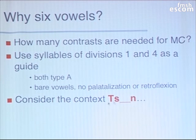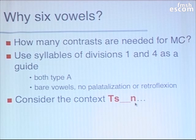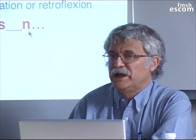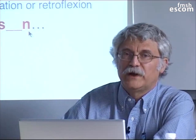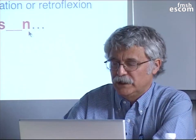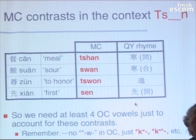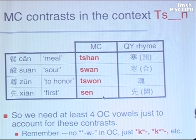So basically, where I started was to figure out how many vowels you would need to account for the contrasts of Middle Chinese in first and fourth division syllables. For purposes of illustration, I'm going to take the context of a sibilant initial with an N coda and see how many contrasts we have in Middle Chinese, and that will take us on the road to figuring out how many vowels we need for Old Chinese.